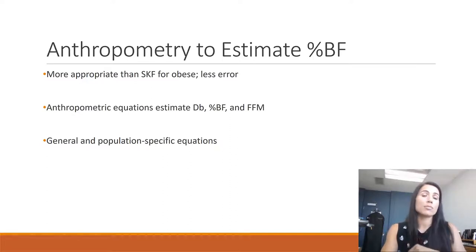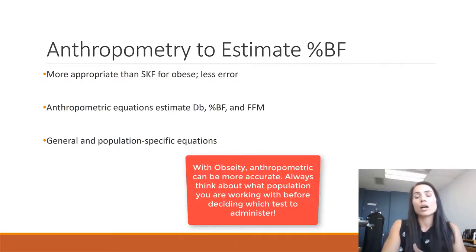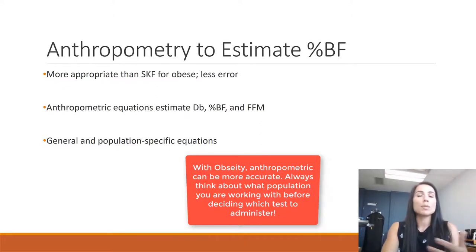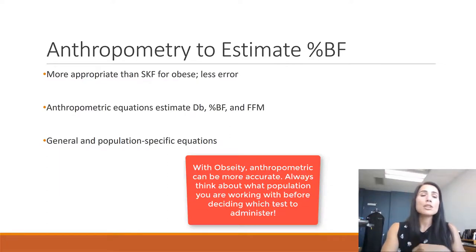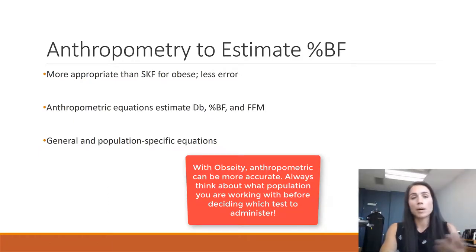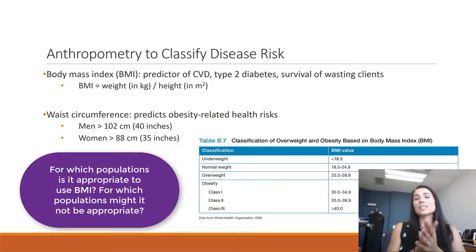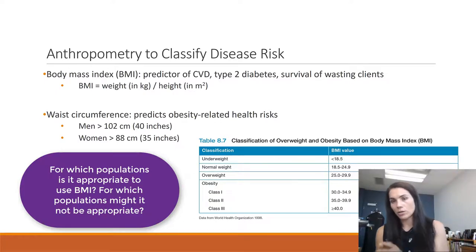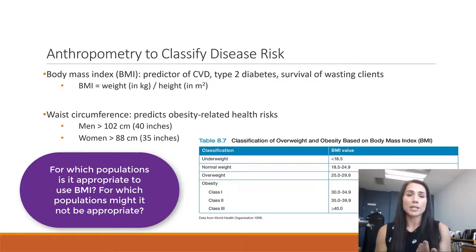Anthropometrics is more appropriate than skin folds for some people, including people who are very obese, because there tends to be less error. People who are obese tend to have not just subcutaneous tissue but also a lot of visceral tissue, and skin folds are not really able to measure visceral tissue at all. Anthropometric equations estimate body density, percent body fat, and fat-free mass, with both general and population-specific equations. In practice, you're either using field-based measures like BIA or skin folds, or you're looking at anthropometrics — you're not usually using anthropometrics to estimate body fat percentage.